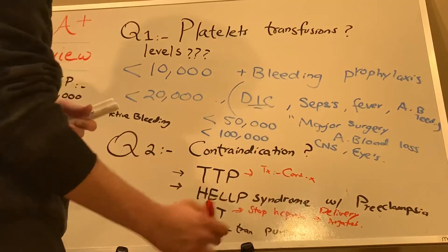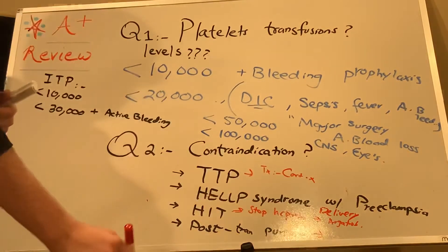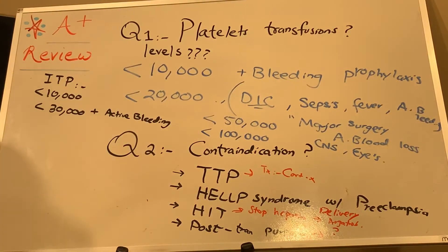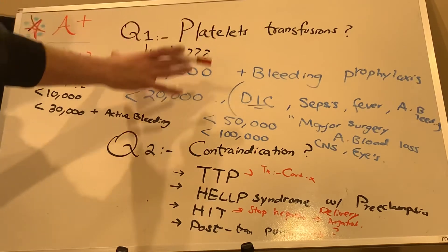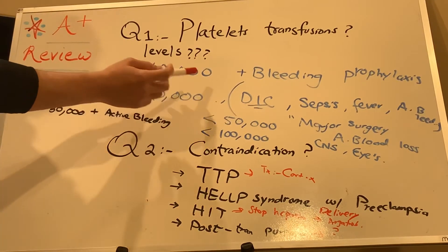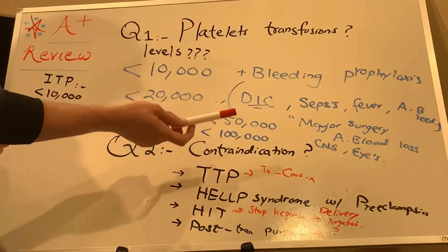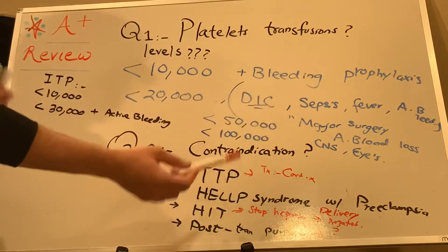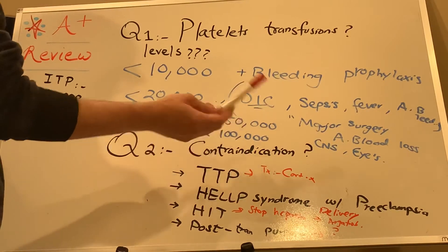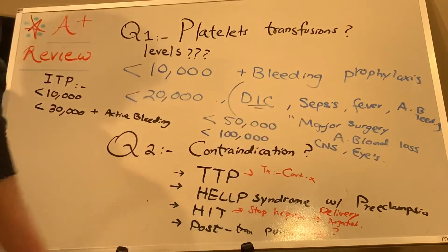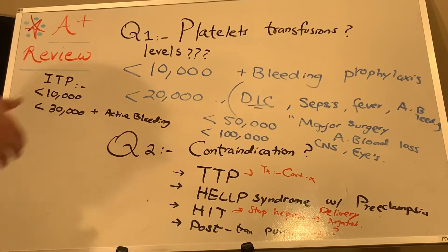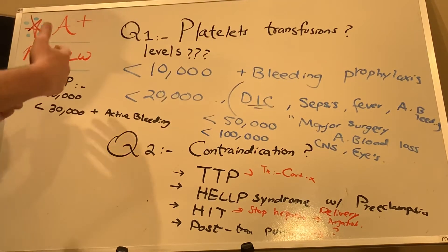Post-transfusion purpura — there's no clear management right now. These are all the conditions where we cannot give platelets. So, to summarize the levels: less than 10,000 with bleeding prophylaxis; less than 20,000 with DIC or sepsis; less than 50,000 with major surgery; less than 100,000 with CNS or eye involvement — hemorrhage and bleeding from the eyes. If you remember this, you are good to go for the exam.